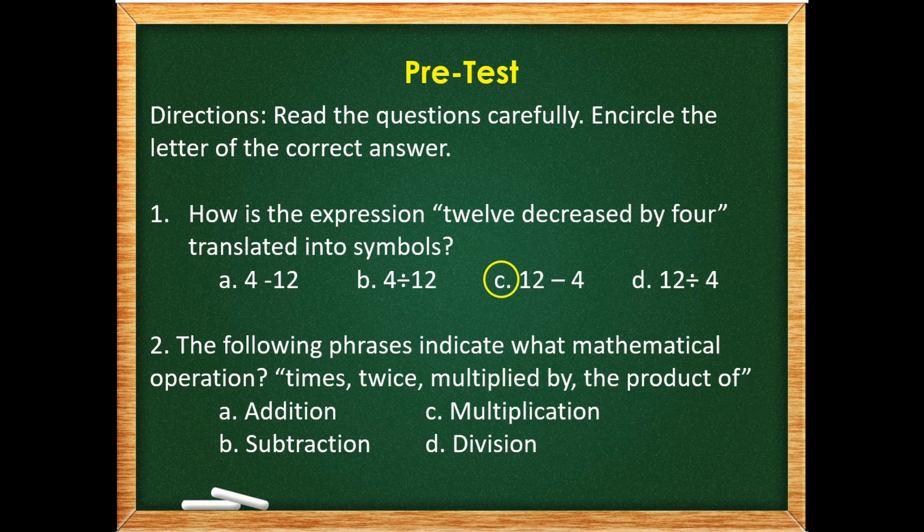Number 2. The following phrases indicate what mathematical operation? Times, twice, multiplied by, the product of. A. addition, B. subtraction, C. multiplication, or D. division.